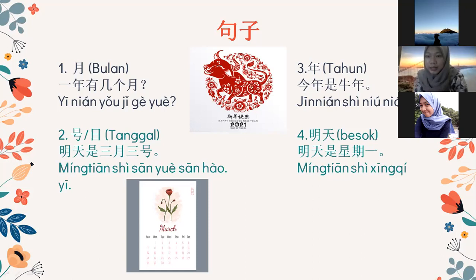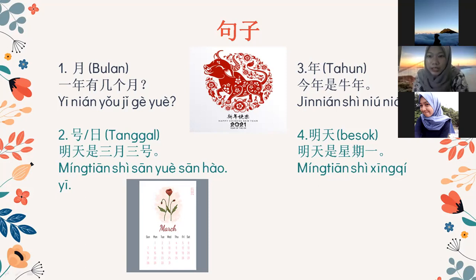年 artinya tahun. Contoh kalimatnya: jin nian, si nian. Yang keempat, MingTian artinya besok. Contoh kalimatnya: ming tian si xing ji yi. Kalau hari ini bahasa Mandarinnya apa, ada yang tahu? Xin Tian, Laos shen. Ya, betul. Hari ini bahasa Mandarinnya jin tian. Kalau besok, ming tian.